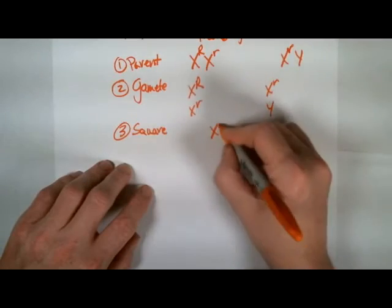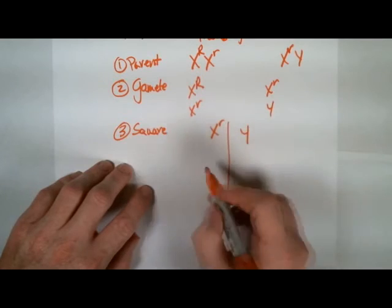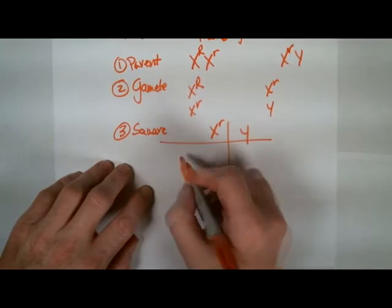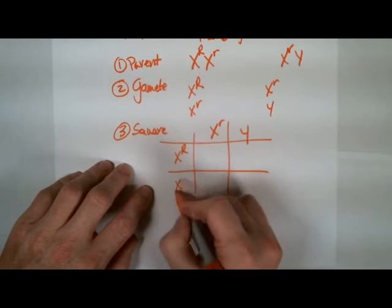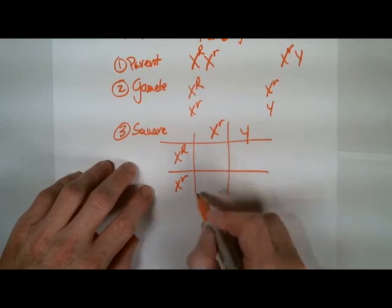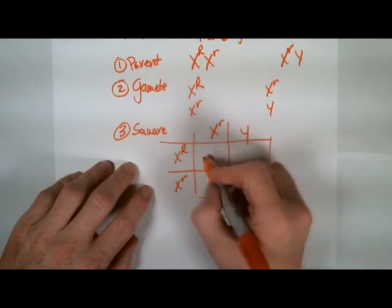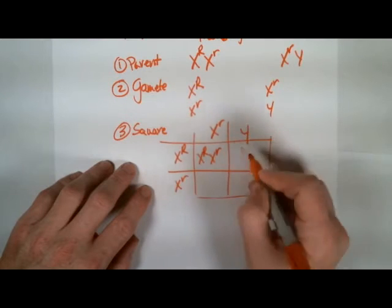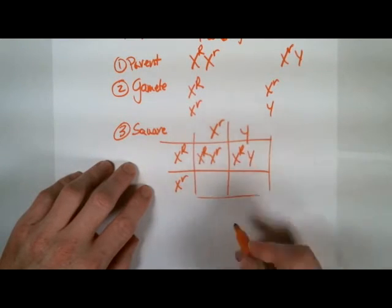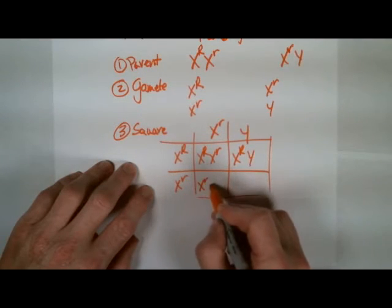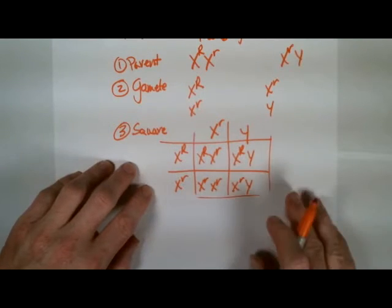So I've got X little r and Y, that's going to be my columns, and then my rows are going to be X big R and X little r. I'm going to fill in the pieces to the square here, X big R, X little r, X big R and Y, X little r, X little r, X little r and Y.